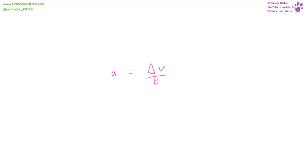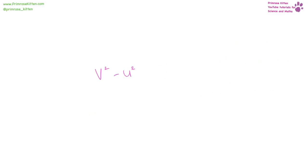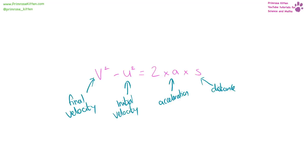Acceleration equals the change in velocity over time. Change in velocity is final velocity minus initial velocity; time is final time minus initial time. Acceleration is in meters per second squared, velocity in meters per second, and time in seconds.